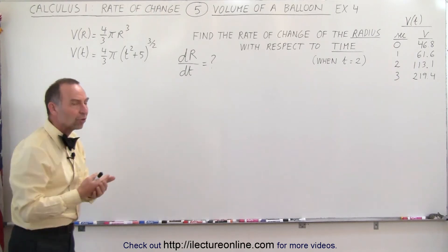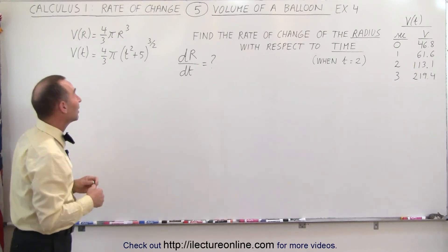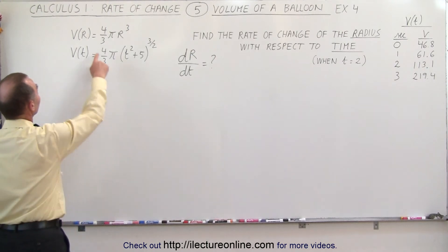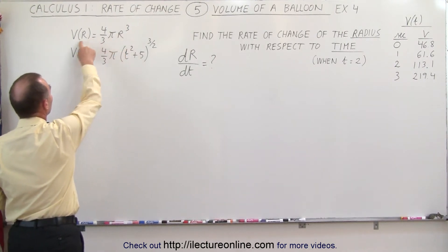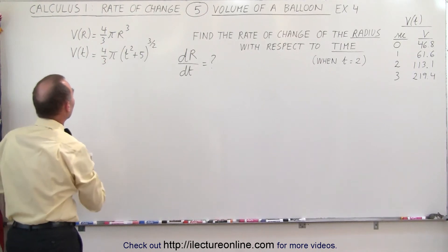But we're not given the radius with respect to time. So that means we need to find an equation that will work for us. So first, what we're going to do is we're going to find the radius as a function of the volume, and then we're going to substitute the volume as a function of time.